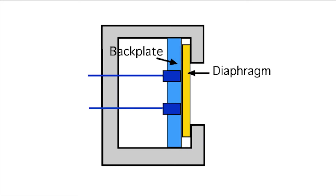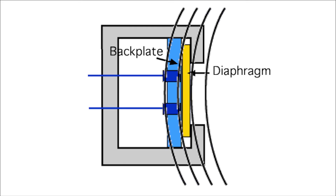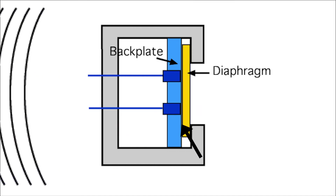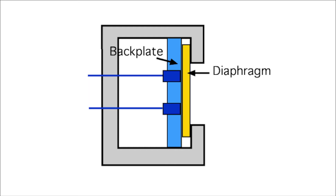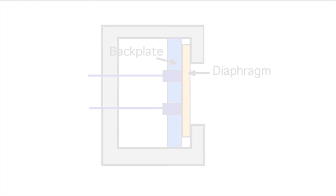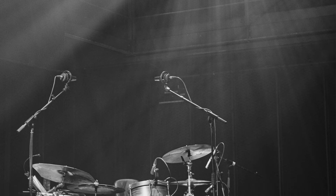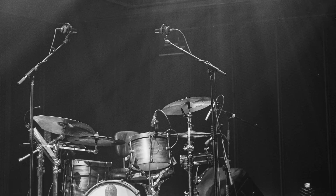In a condenser microphone, the diaphragm is one of the two plates in a capacitor. A DC circuit from a battery or phantom power supplies the microphone with a continuous voltage to keep the plates charged. As the diaphragm interacts with sound waves, the distance between it and the other plate changes. Condenser microphones are far more sensitive than dynamic microphones, making them ideal for applications such as choirs or drum overheads, but they are more susceptible to feedback or clipping from loud sound sources.